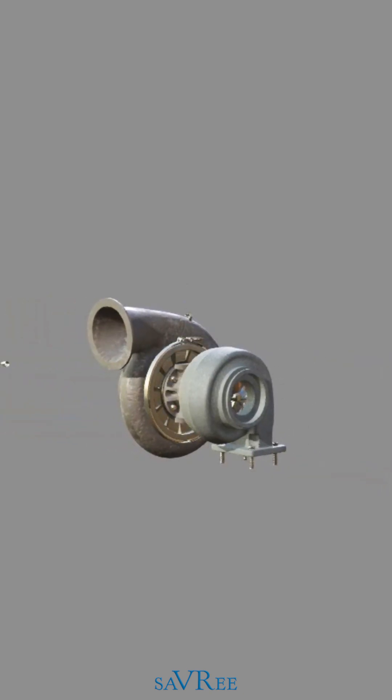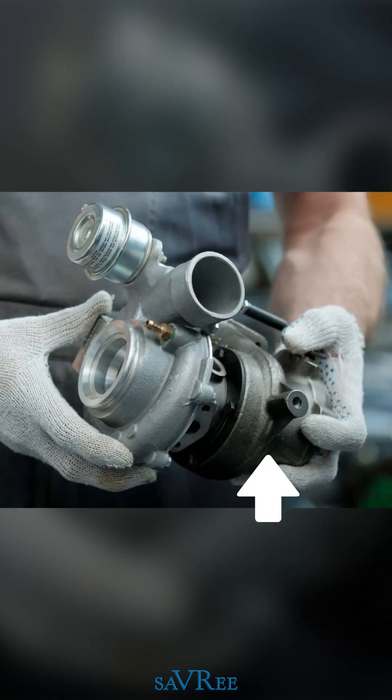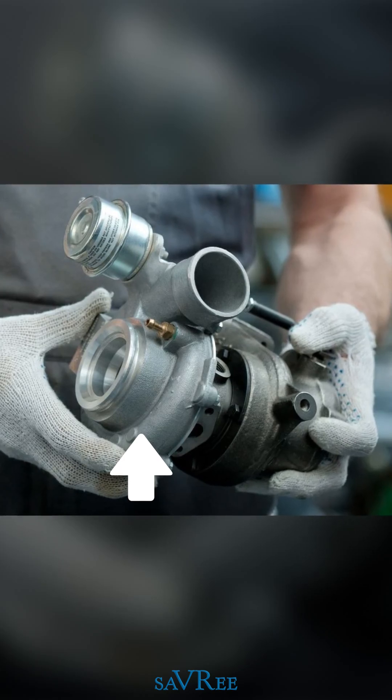A turbocharger consists of two main parts, the turbine and the compressor. The turbine is located in the exhaust side of the engine, whilst the compressor is located in the air side of the engine.